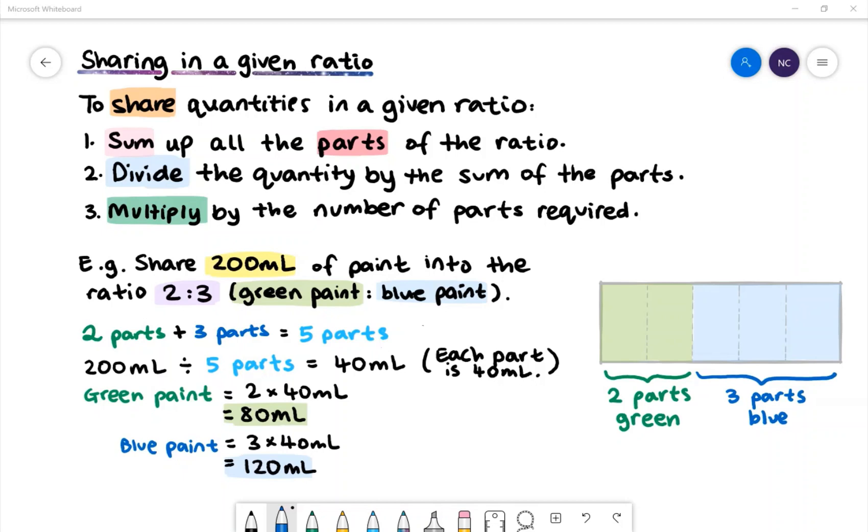We then divide the quantity 200 milliliters by 5 parts to find out how many milliliters one part is. 200 milliliters divided by 5 parts equals 40 milliliters. So each part is worth 40 milliliters.